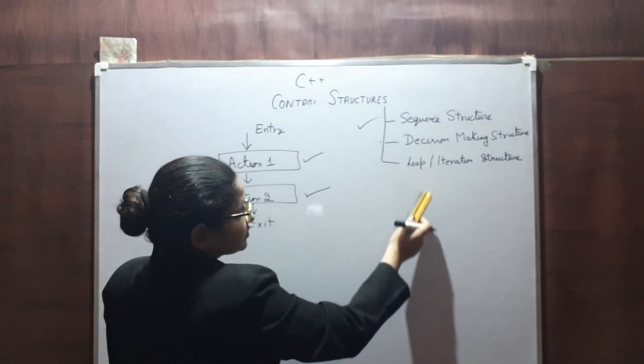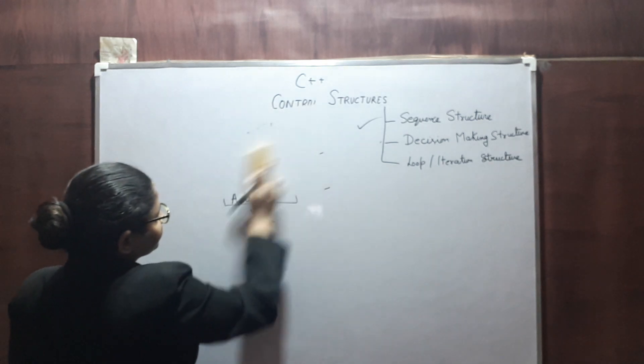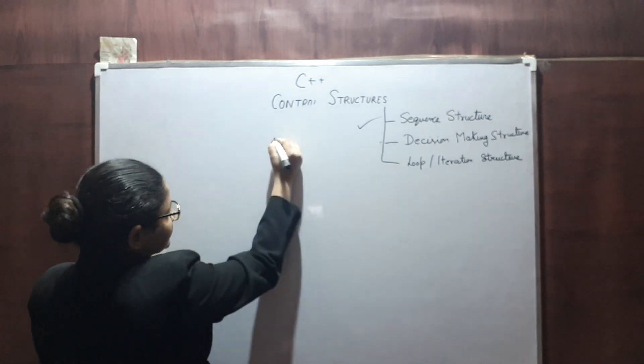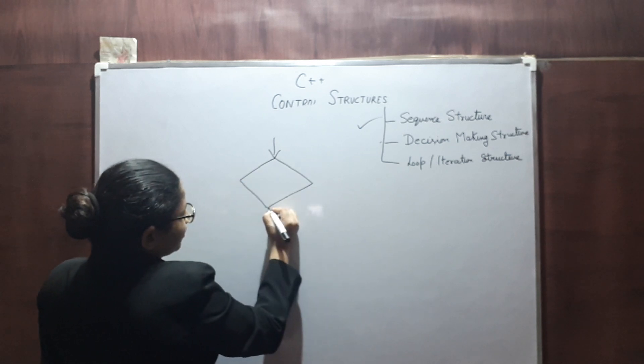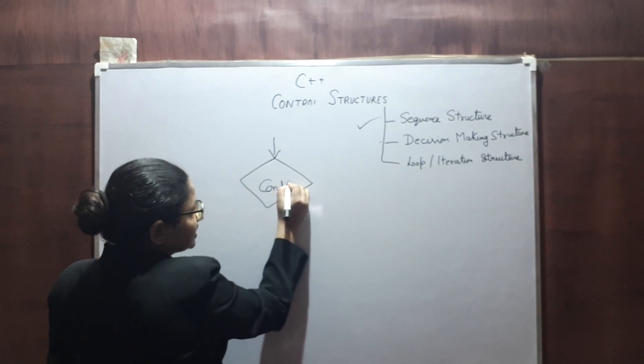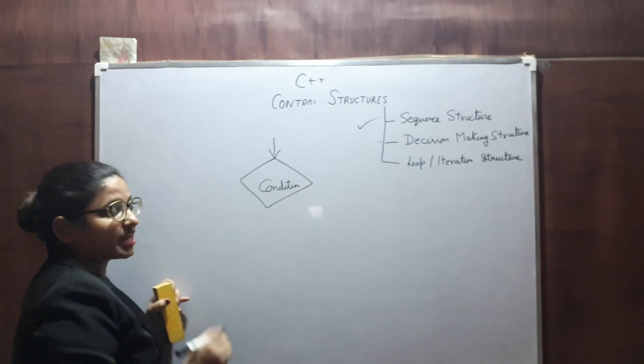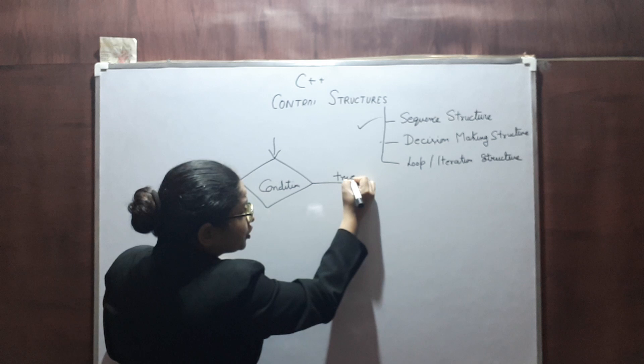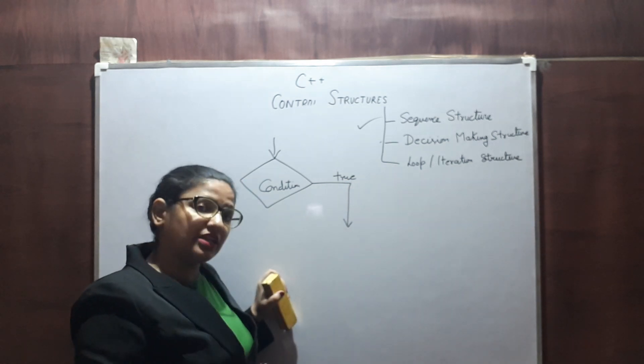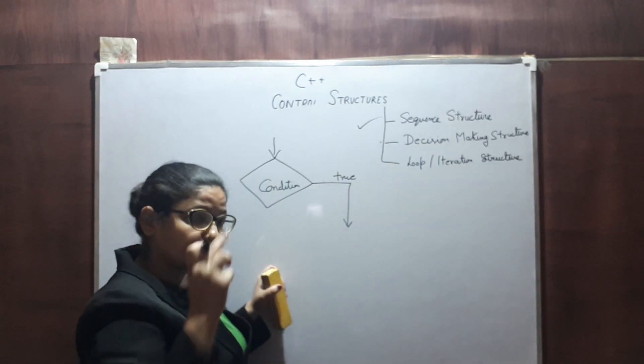And next we have decision making. Suppose at some point of time in our program we check for some condition. If condition comes out to be true, if condition is evaluated to true.